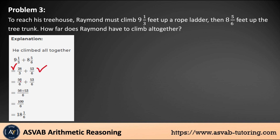Now you have to find the common denominator. Reading the multiplication tables: 3, 6, 9, 12 and 6, 12, 18 — the smallest common denominator is 6. Then you add the numerators, giving you 109 over 6. Dividing that: 6 goes into 109 — you get 18 remainder 1, which as a mixed number gives you 18 and 1/6. That is the final answer.